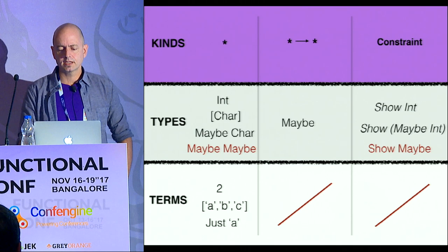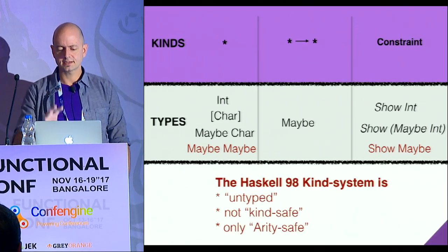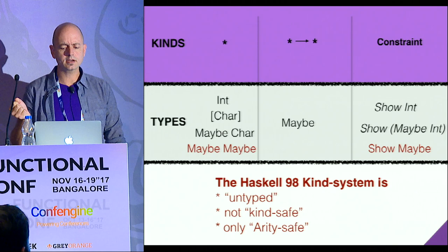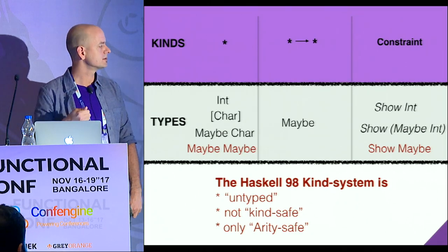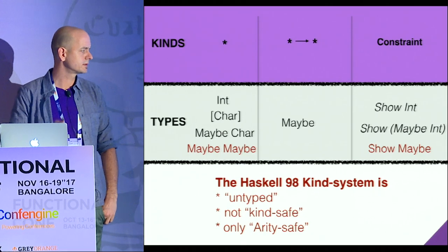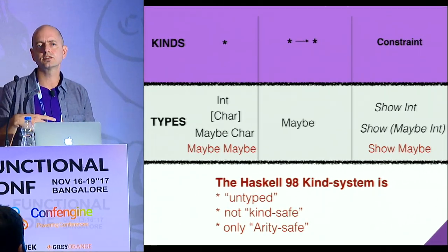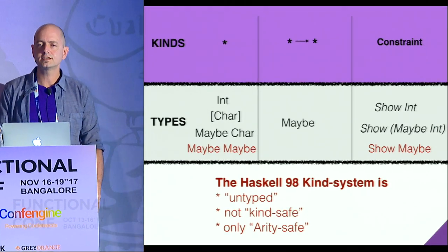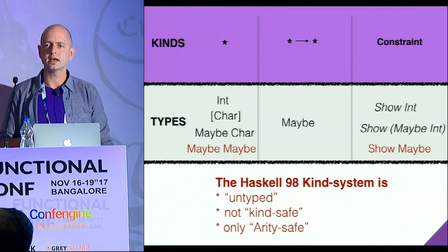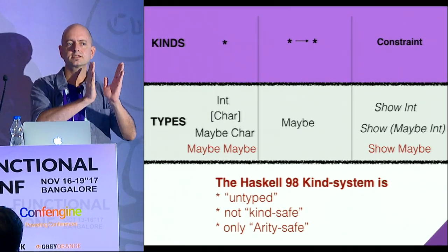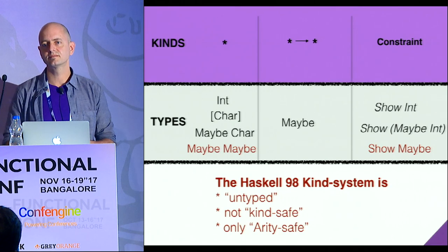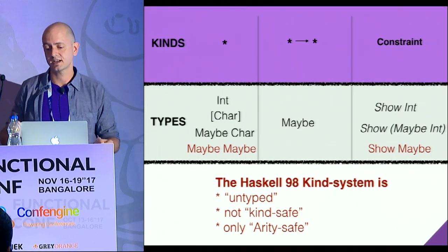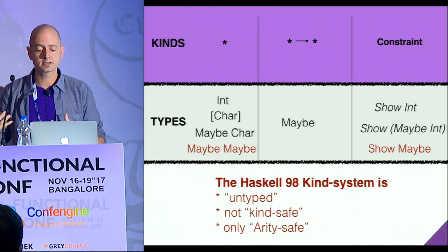We can already start seeing cracks in the facade here. The kind system is untyped — the language gets a bit tricky. You could also say it's not kind safe. It's only arity safe. It only speaks of how many: is it one single type, or is it something that takes a type, or is it a constraint?